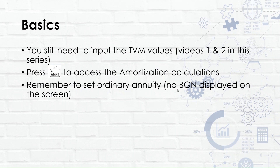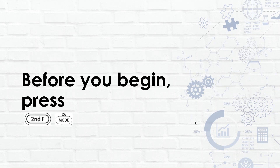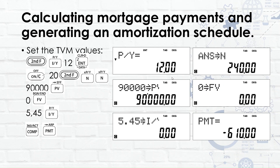Remember that you need to set ordinary annuity on your calculator and not BGN. It won't work when you are looking at annuities starting at the beginning, or payments made at the beginning of the month — amortization calculations always calculate from the end of the month. My favorite rule: remember to press second function mode before you begin using your calculator, to clear away any old values that may confuse your new answer.